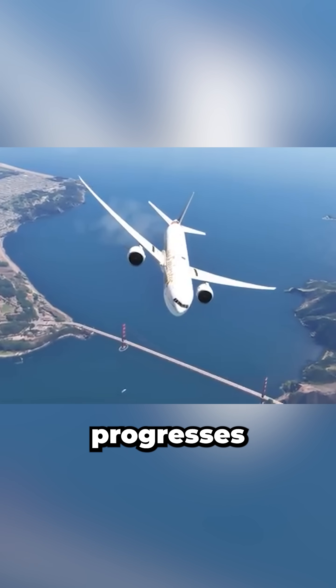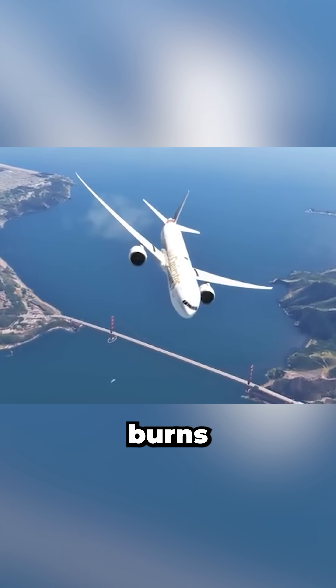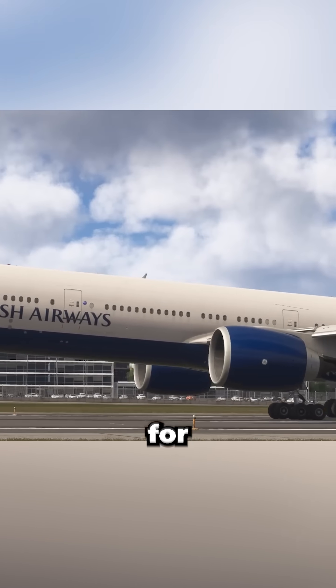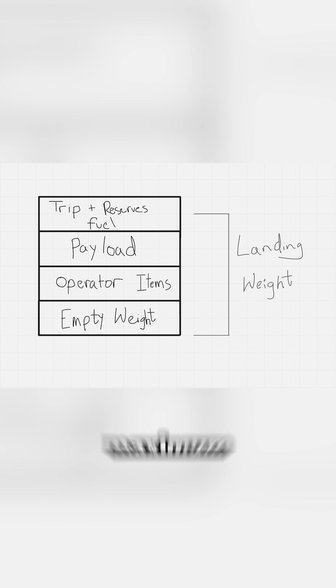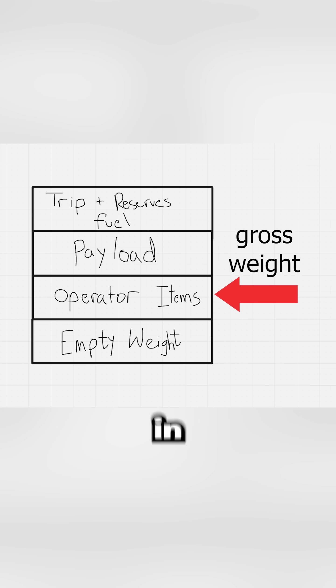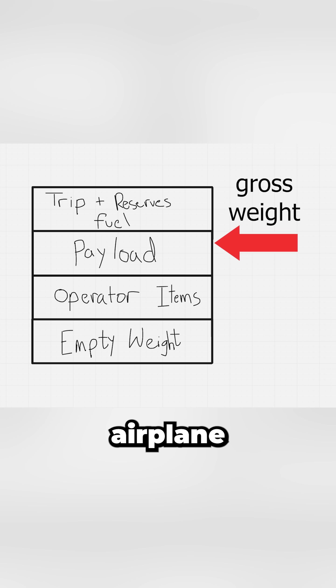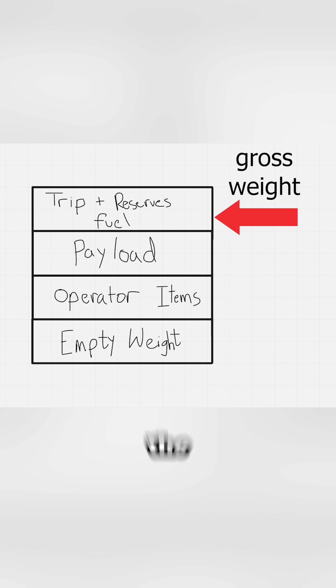As the flight progresses, fuel burns off, and the heaviest weight the manufacturer has certified for landing is called the maximum landing weight. And at any point in that whole process, the total weight of the airplane is simply called the gross weight.